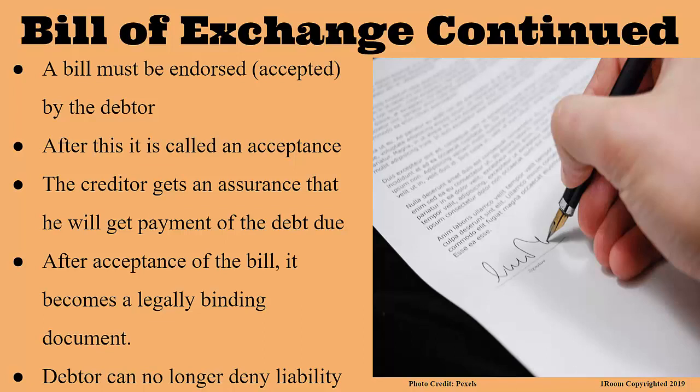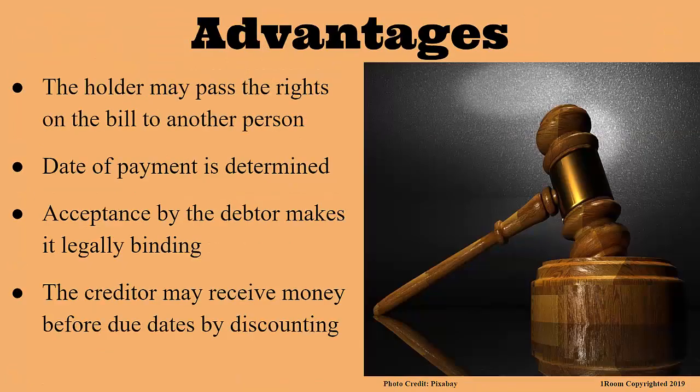Why would a creditor choose to use a bill of exchange over other methods of recovering their money? Because it has quite a number of merits. The drawer, who is also called the holder, may decide to pass the rights of the bill to another person so it can be used to pay a third party. Secondly, the date of payment is clearly outlined in the bill, and the debtor is bound to it once he accepts. Once accepted, it is legally binding and cannot be revoked, so the creditor is assured of getting his money. Also, if the debtor pays before the due date, he may end up getting a discount — so both sides win.